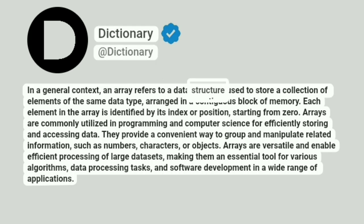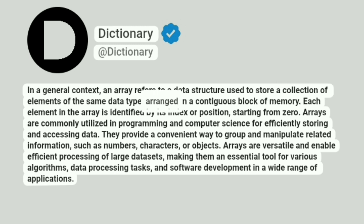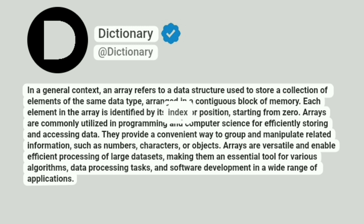An array refers to a data structure used to store a collection of elements of the same data type, arranged in a contiguous block of memory. Each element in the array is identified by its index or position, starting from zero.